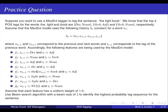The features are: previous tag is determiner and current tag is adjective; previous tag is noun and current tag is verb; previous tag is adjective and current tag is noun; previous word is 'the' and current tag is adjective; next word is 'light' and current tag is determiner; and previous word is null and current tag is noun — meaning the current word starts the sentence, so the previous word is null. Each feature has a uniform weight of one for simplicity.